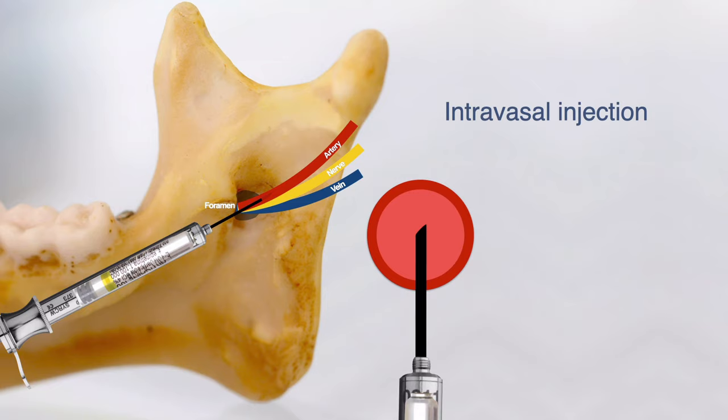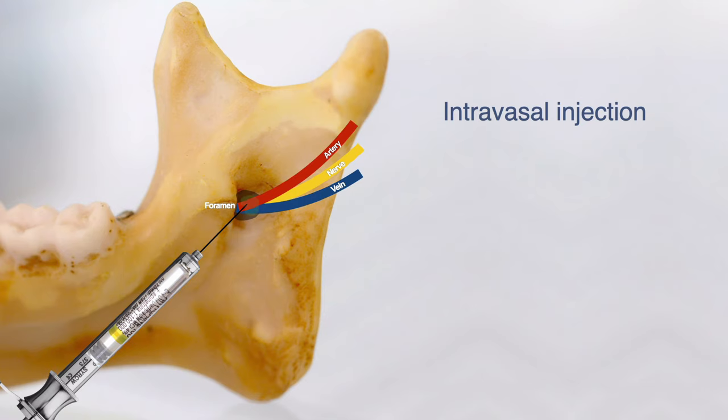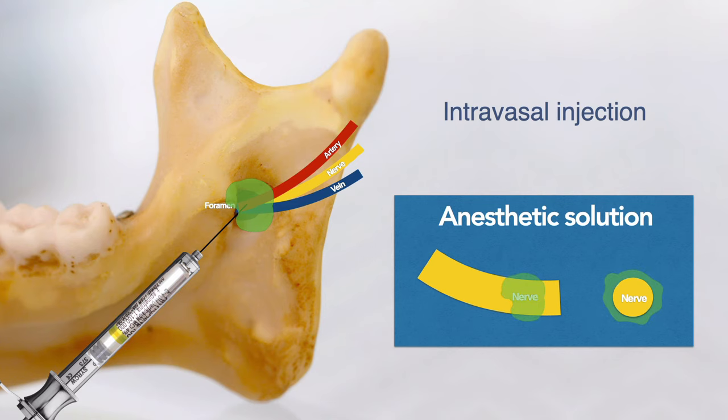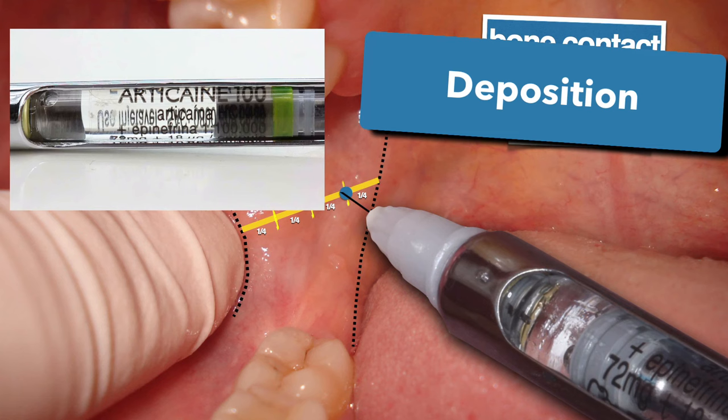A rapid intravascular injection can lead to a relative overdose reaction, and in addition, anesthesia will not be established. You have to realize that for the nerve impulse to be prevented from being conducted through the nerve fibers, the anesthetic solution must be in direct contact with the nerve — which is not the case with an intravascular injection.